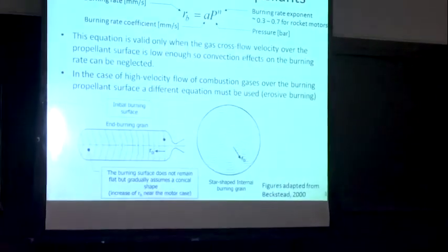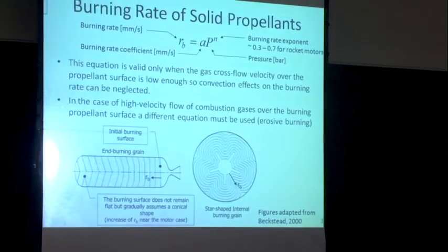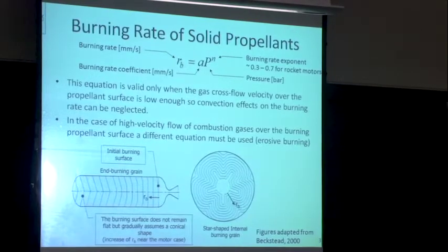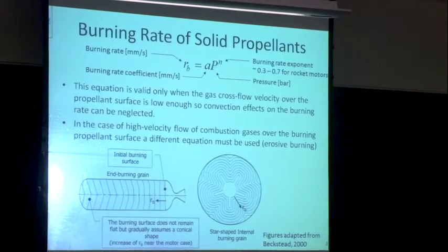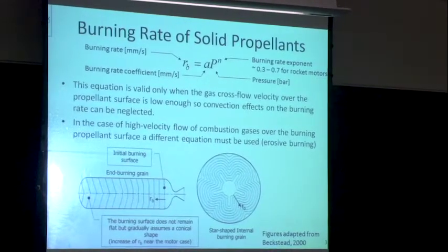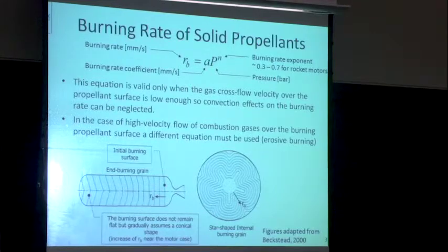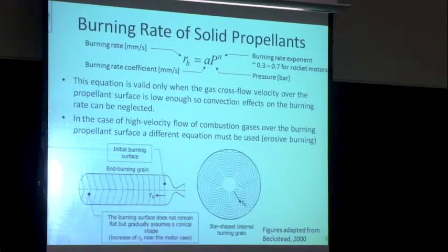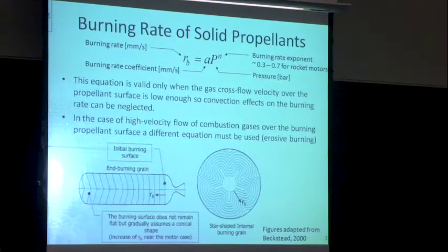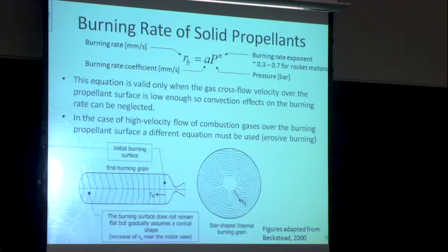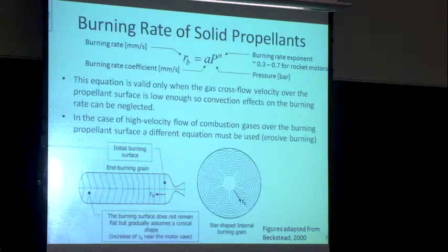Everything I've been talking about so far, particularly in using this equation, assumes I have no cross-flow across the surface. So I have a flat surface, the flame is regressing downward, and the heat transfer from the gas to the solid is mainly through conduction. In many practical cases, I'm going to actually have a cross-flow across the surface, and that can change the burning characteristics quite significantly.